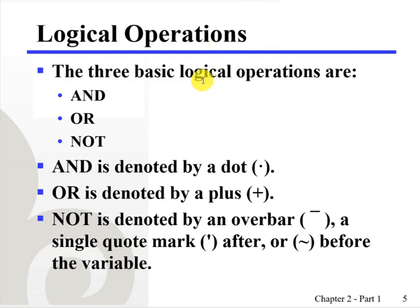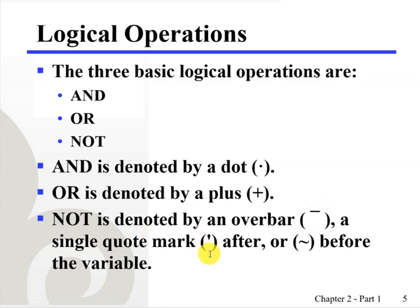Associated with binary variables are three basic logical operations: AND, OR, and NOT. The AND operation is represented by a dot, or sometimes by the absence of an operator. The OR operation is represented by a plus symbol. The NOT operation is represented by a bar over the variable, or sometimes a single quote mark after the variable, or a tilde before the variable.